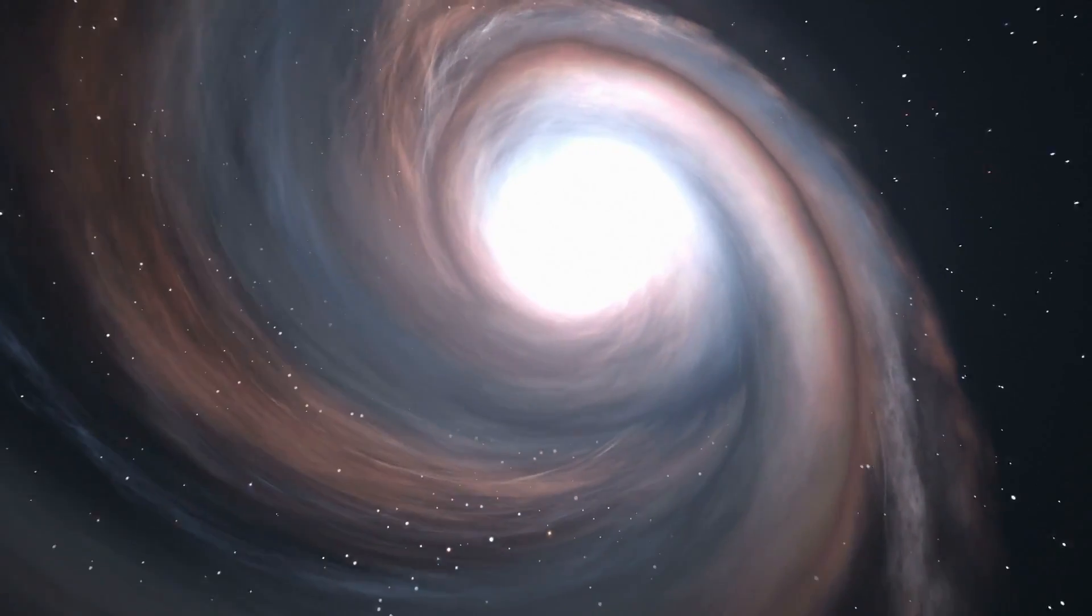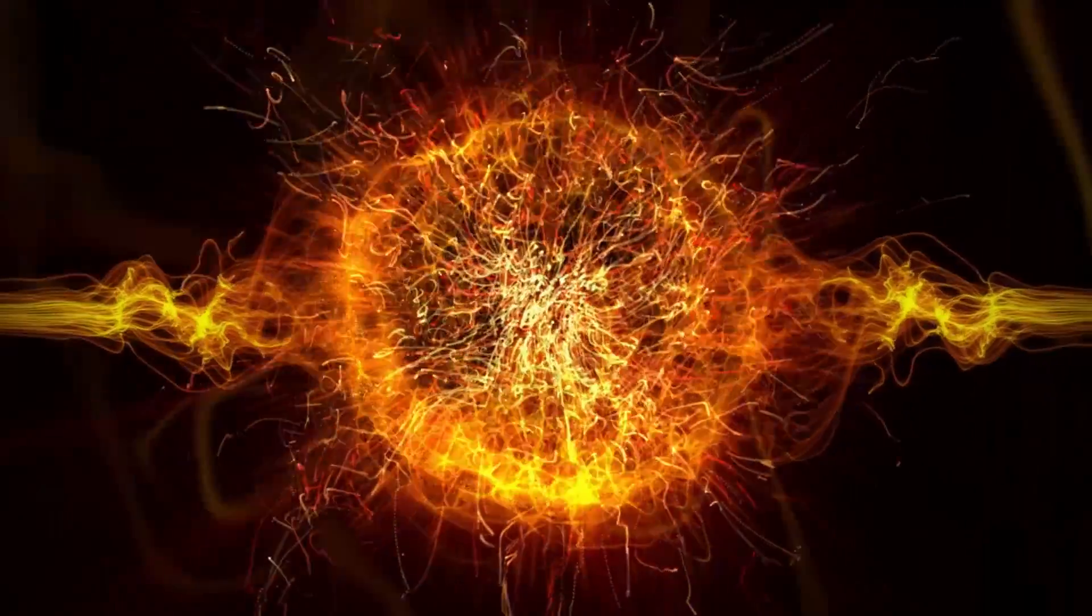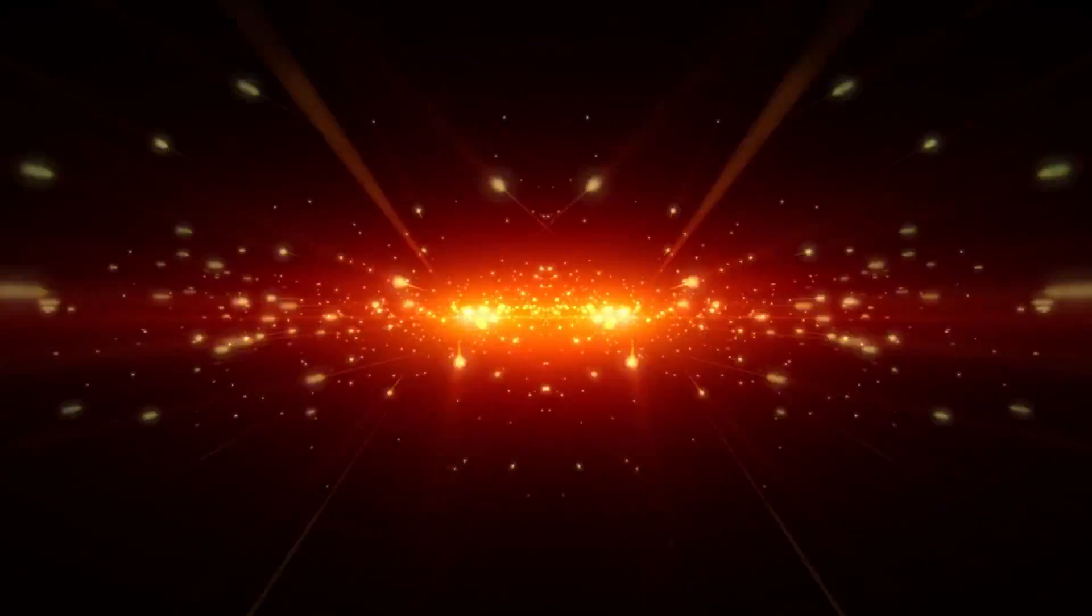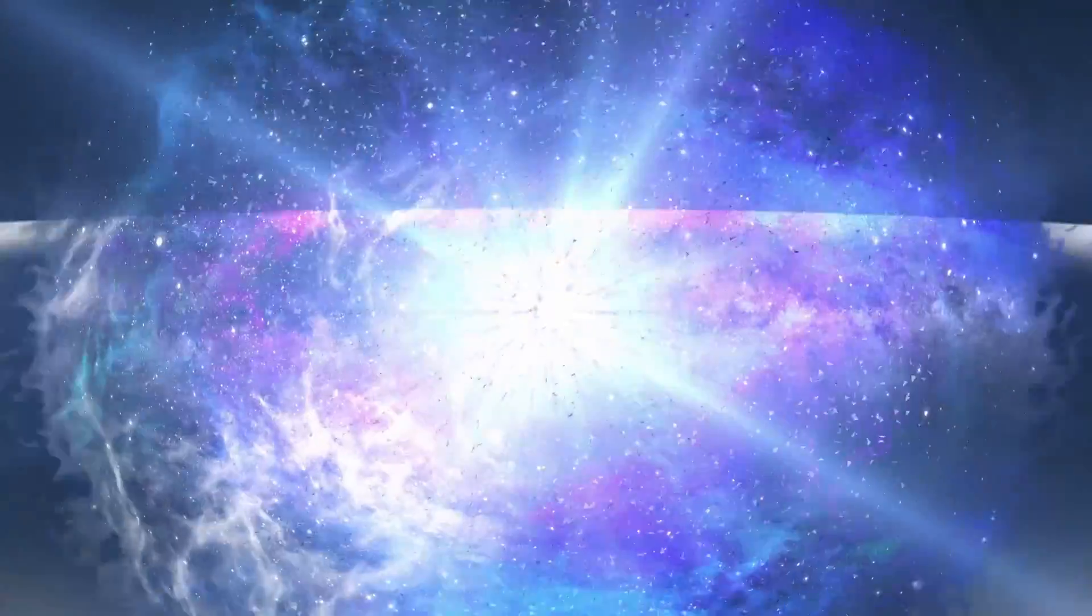Eventually, gravity will begin to pull the gas particles within the cloud closer together, creating clumps of slightly higher density. These clumps will continue to grow like a snowball rolling down a hill as they gather more and more mass from the collapsing nebula.